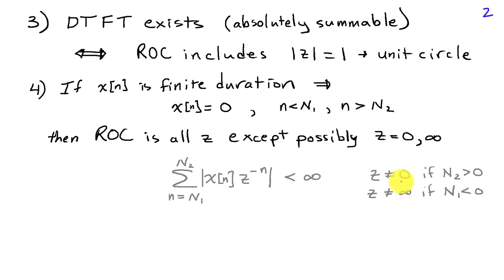We only have two possibilities we have to exclude. If there's a Z-inverse term, in other words, if there's a positive n, then we can't have Z equals zero because the inverse would blow up. On the other hand, if there's a Z-term, if one of the n's are negative so that this is Z raised to a positive power, then we have to exclude Z equals infinity. But other than those two possibilities, the Z-transform for a finite duration sequence has a region of convergence equal to the entire Z-plane.